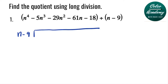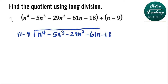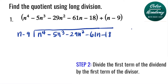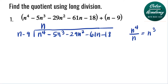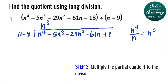Our dividend will be inside: n to the 4th minus 5n cubed minus 29n squared minus 61n minus 18. Now we divide the first term of the dividend, n to the 4th, by the first term of the divisor, n. That gives us n to the 3rd power, because we subtract the exponents: 4 minus 1. So the first term of the answer is n cubed. Now we multiply the divisor by n cubed: n cubed times n is n to the 4th, and n cubed times negative 9 is negative 9n cubed.